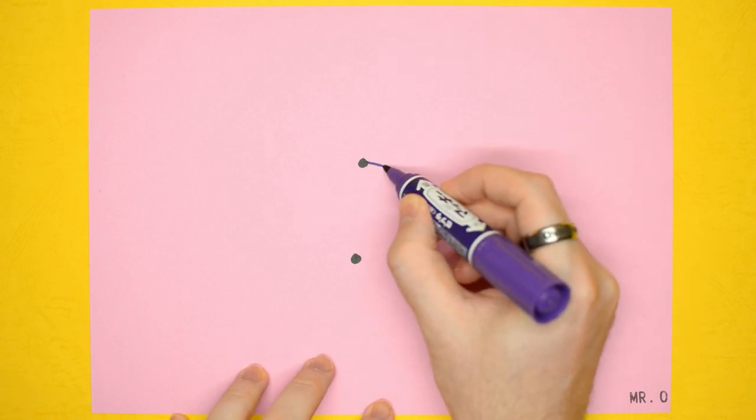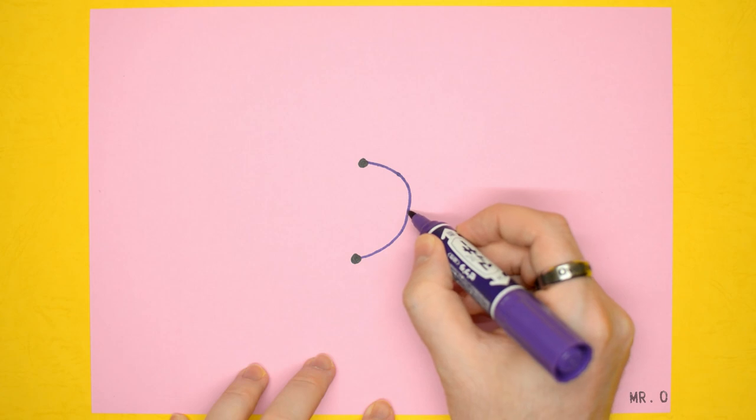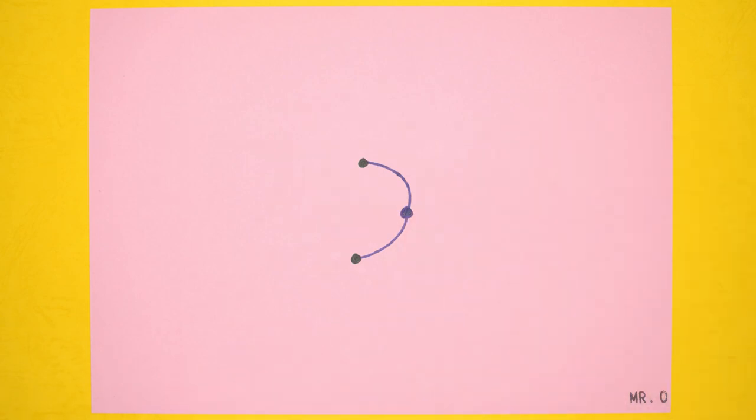The first player draws a line from one spot to the other spot. In the middle of the line, they draw a new spot.